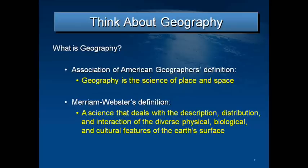So what is geography? You don't need to memorize these definitions, but it's good to take a quick look at these. The Association of American Geographers' definition is: geography is the science of place and space. Merriam-Webster's definition is: a science that deals with the description, distribution, and interaction of the diverse physical, biological, and cultural features of the Earth's surface.